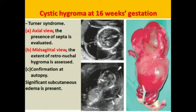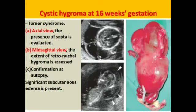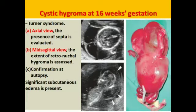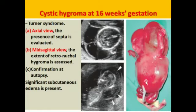This is an axial image and you can see the septa separating the sacs from each other, so there are cysts forming in the nuchal area. This image is a mid-sagittal view showing the retronuchal hygroma. These findings are confirmed by autopsy, and you can see significant subcutaneous edema is present as shown in these images and also in this fetus.